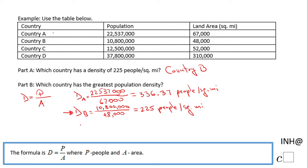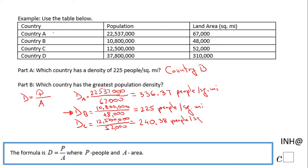Moving to country C, we calculate the density: 12,500,000 divided by 52,000. We get 240.38, which rounds to 240 people per square mile.